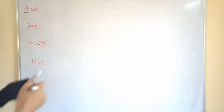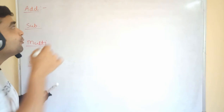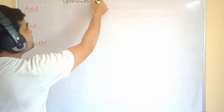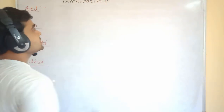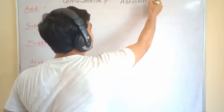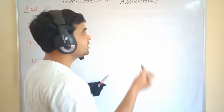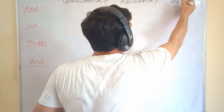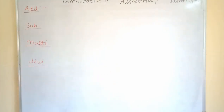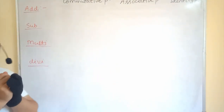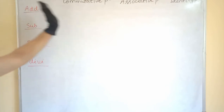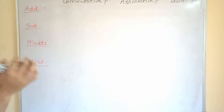Basically, how many types of properties are there? The first is commutative property, the second one is associative property, and the third one is identity property. These three major properties are there that we are going to discuss for each and every operation. First of all, we will look at addition.